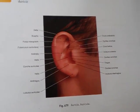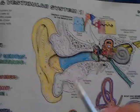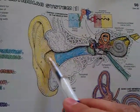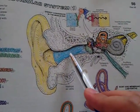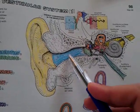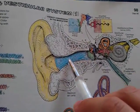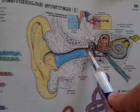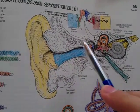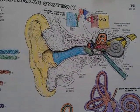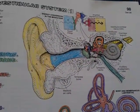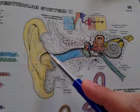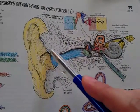The external acoustic meatus extends from the concha to the tympanic membrane. It is an S-shaped canal, oval in section, and the greatest diameter is at its external end.